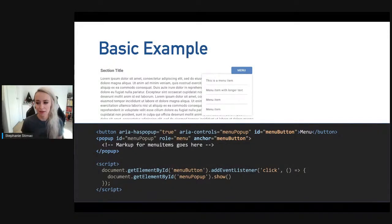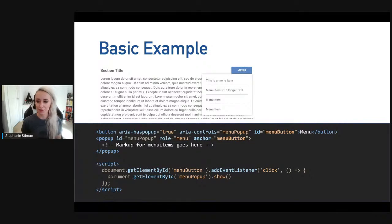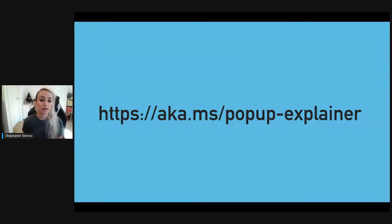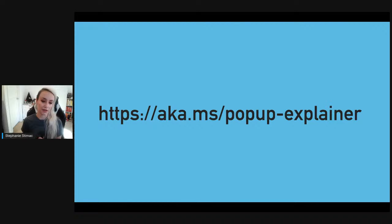Here's a basic example of the popup element: we have a button element and a popup element. To tie the button to the popup, we set button id to 'menu-button' and use an anchor attribute set to that button ID. Currently, popup menus are not visible until 'show' is called by the author, so we do need some script. There are many more details in the popup explainer at aka.ms/popup-explainer.